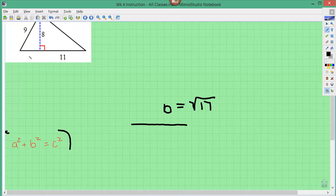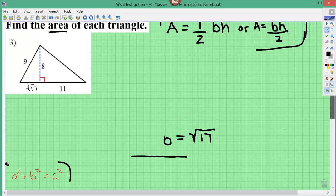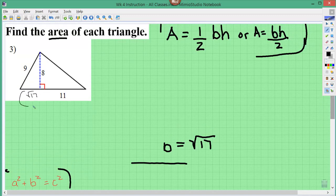So now that we have, that this is root 17 right there, now we have the base, the base length is this, 11 plus root 17, and the height is 8. So we can plug it into the formula.